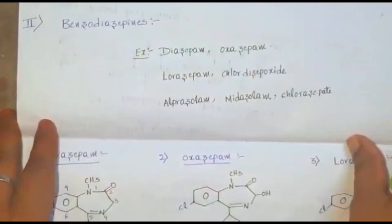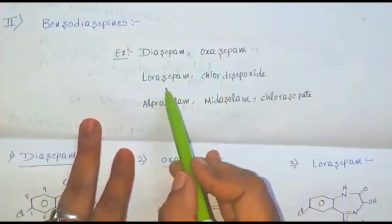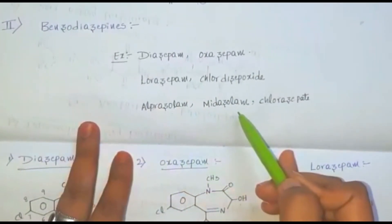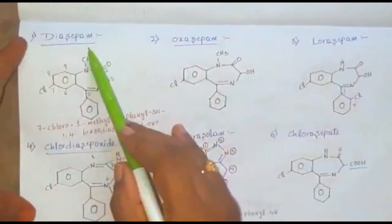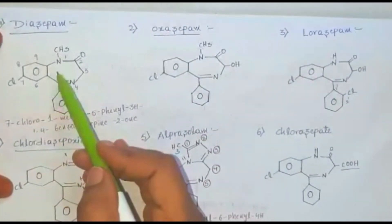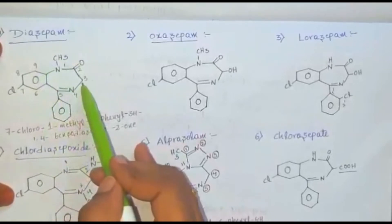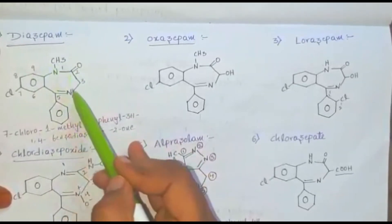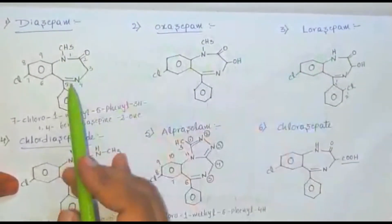The second category is benzodiazepines. Examples: diazepam, oxazepam, lorazepam, chlordiazepoxide, alprazolam, midazolam, clorazepate, etc. Benzodiazepines means a benzene ring fused with a seven-membered ring containing an unsaturation, with two aza moieties at the 1,4 positions.